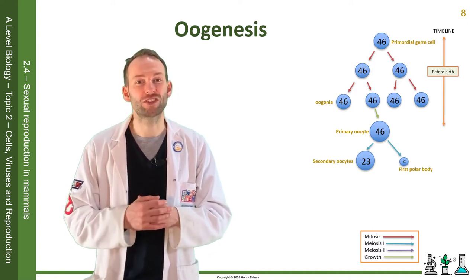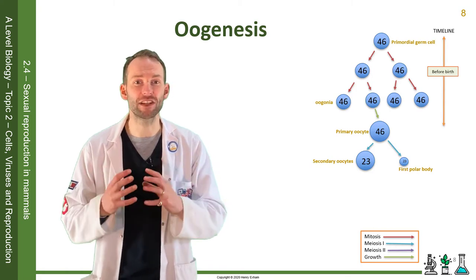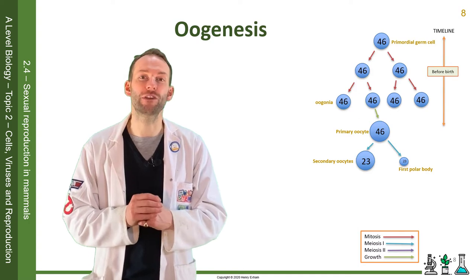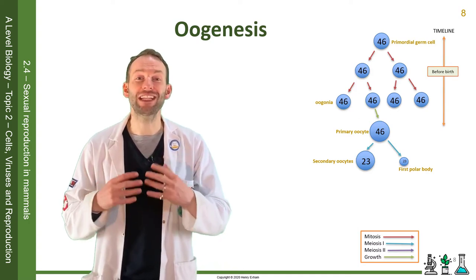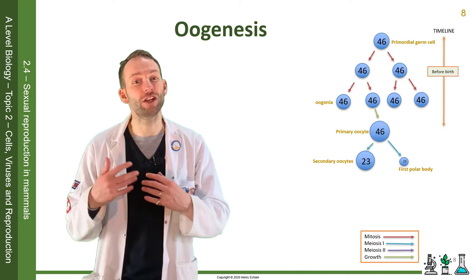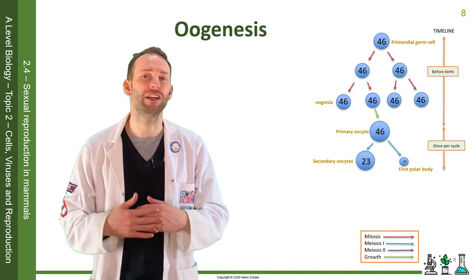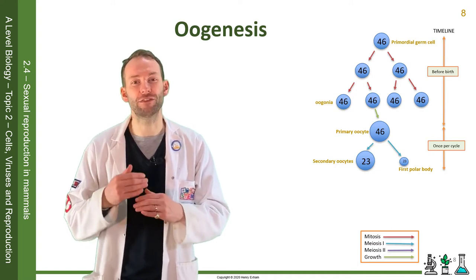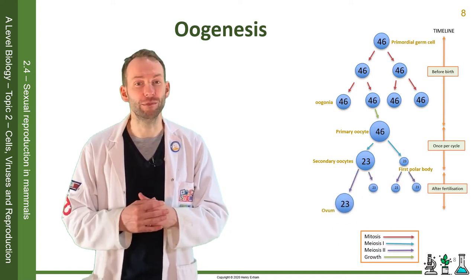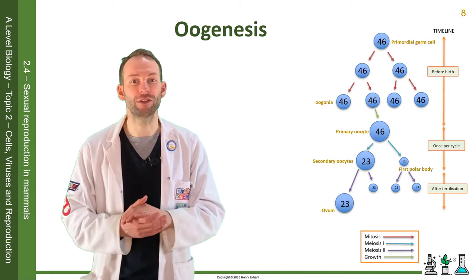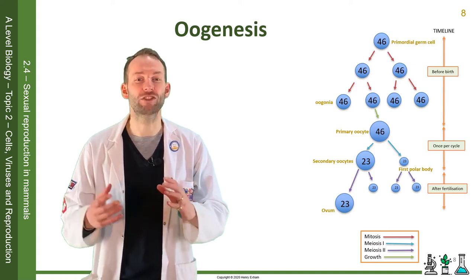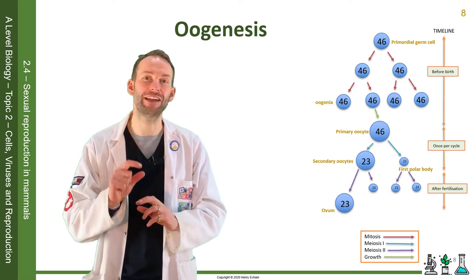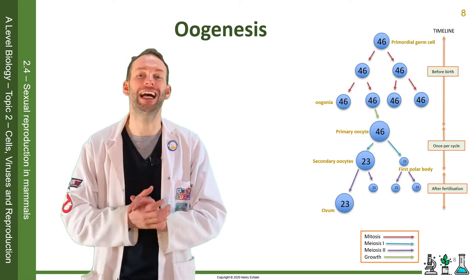The first meiotic division makes two cells that are uneven in size. The big one is the secondary oocyte and the little one is what we call the first polar body. This is how the eggs exist in the ovary, and no further changes happen until after fertilization. But then the secondary oocyte divides to make the ovum, whilst the first polar body divides again to make two more polar bodies. The polar bodies, though, are useless — they break down, and we're just left with that final ovum at the end.